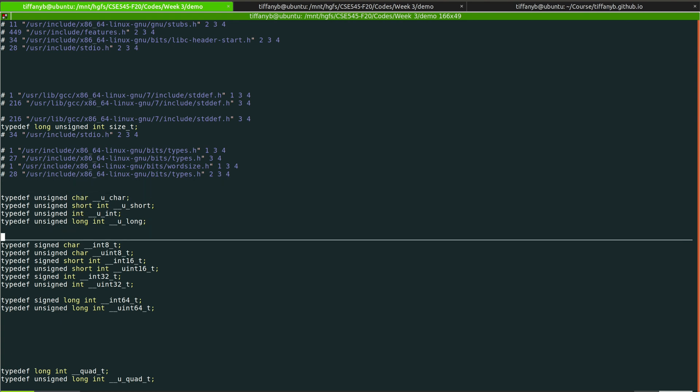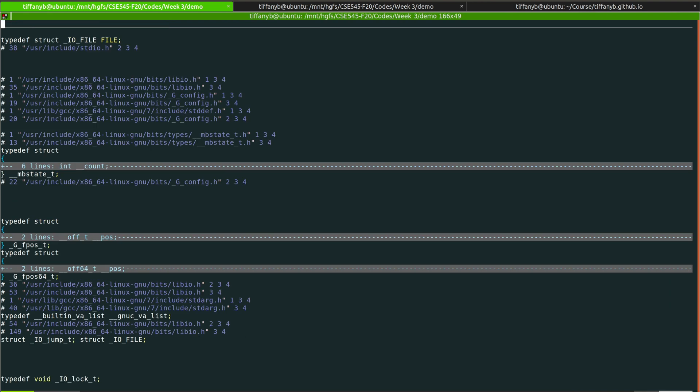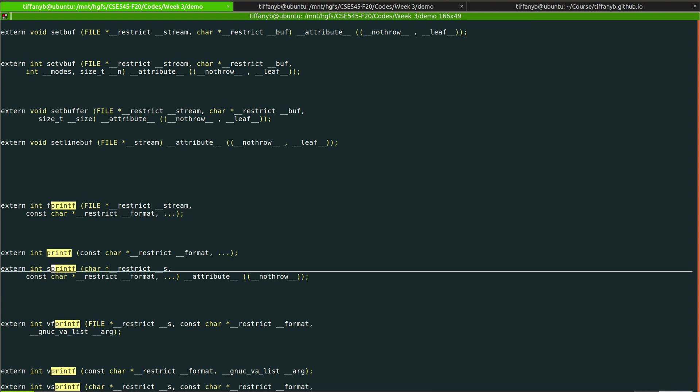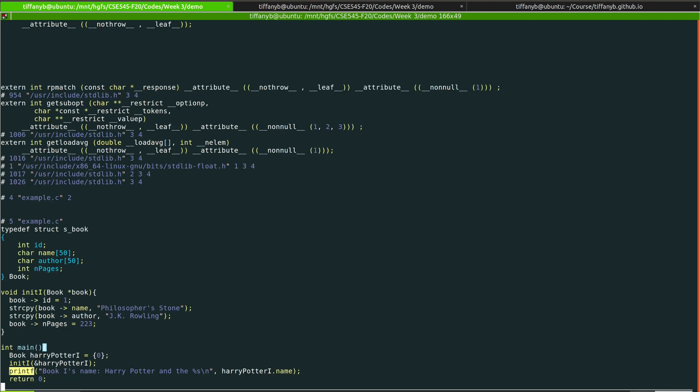And also we can see that there are a lot of typedefs as well as the declarations of functions such as printf or fprintf. This file is very long. There are about 2k lines of code. The end of the code is the actual example.c that we wrote before.